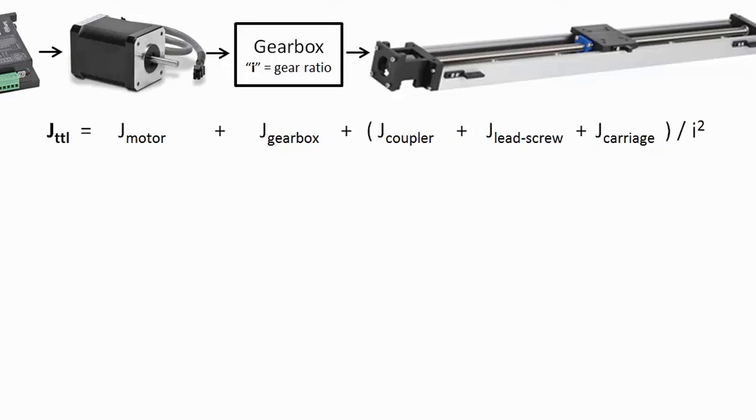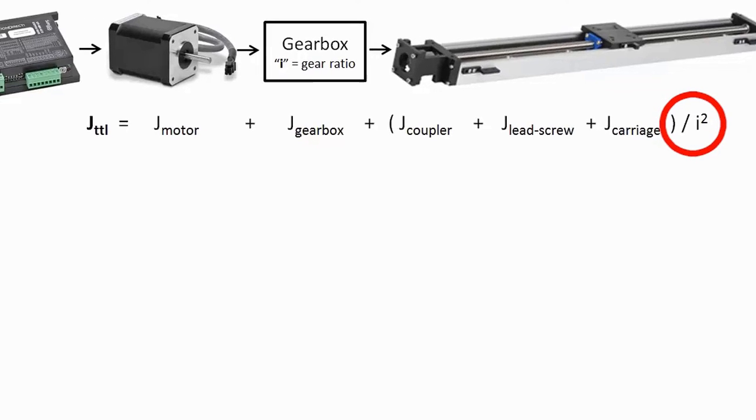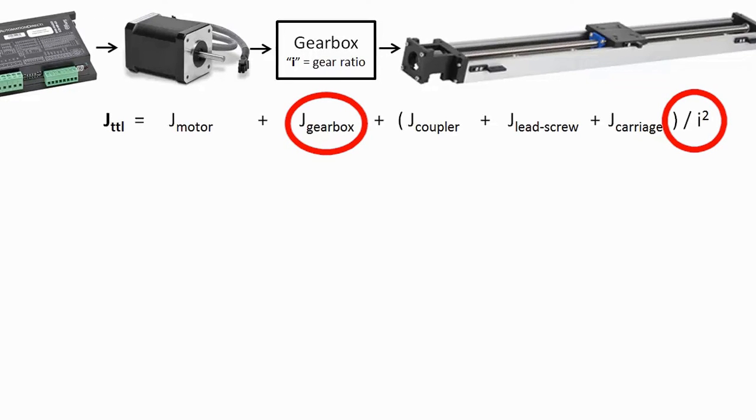Remember from our equations, the inertia reflected back to the motor is modified inversely by the square of the gear ratio. So by adding some kind of gear reduction, you can drastically change the inertia the motor sees. For example,